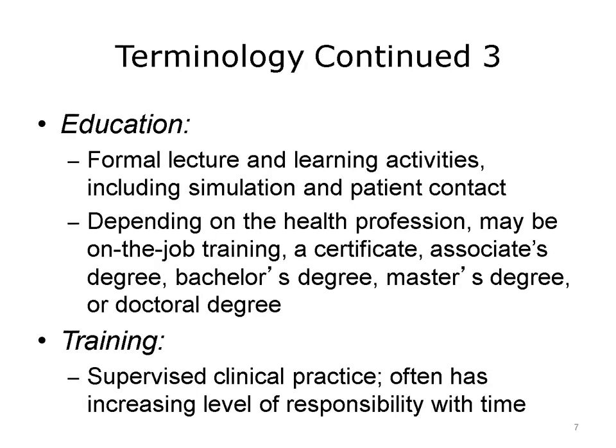Each lecture in Unit 2 describes the sequence that various health professionals go through to become educated, trained, and eligible to practice. Professional health education is a formal program that usually presents lectures and other learning activities, including simulation and patient contact. Depending on the health profession, it may be on-the-job training, a certificate, or an associate, bachelor's, master's, or doctoral degree. Health professions training is typically supervised clinical practice with an increasing level of responsibility over time.